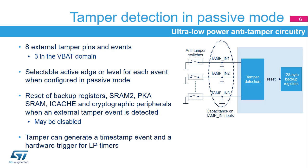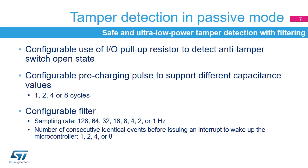Note that an external pull-up is required in edge detection mode. In level detection mode, the internal pull-up is used. The tamper detection circuit includes an ultra-low power digital filter. The internal I/O pull-up can be used to detect the anti-tamper switch state. The pull-up is applied only during the pre-charging pulse in order to avoid any consumption if the tamper pin is at a low level. The pre-charging pulse duration is configurable to support different capacitance values and can be 1, 2, 4, or 8 TAMP clock cycles.